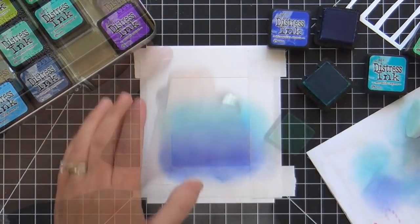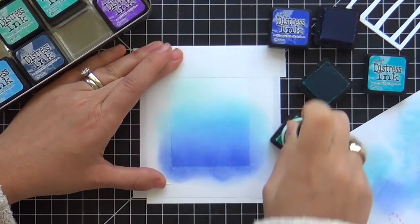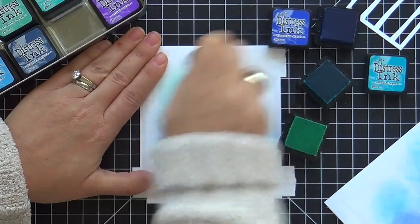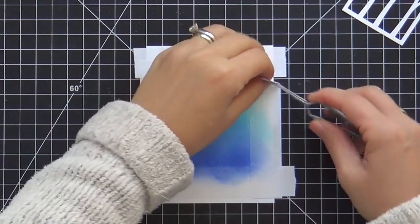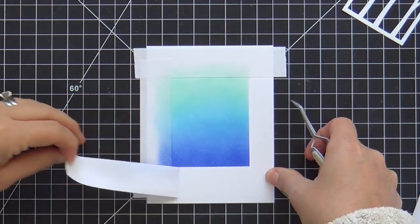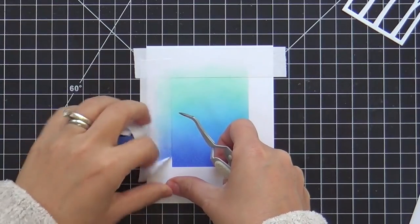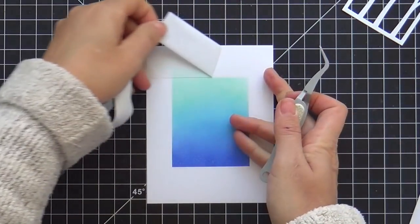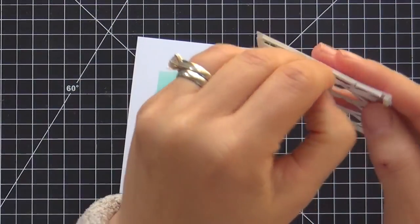This time around I'm ink blending with the cool tones. So I started with Blueprint Sketch, Mermaid Lagoon, and Cracked Pistachio. Now removing the mask and I tell you it never ever ever gets old. This just makes my heart go pitter-patter. It never ever gets old.